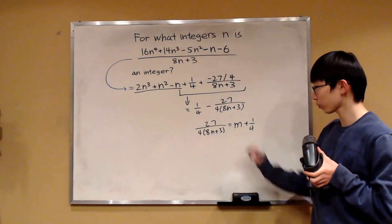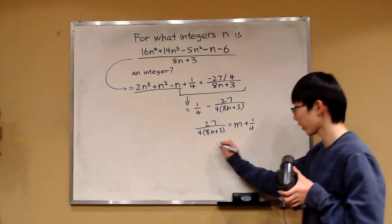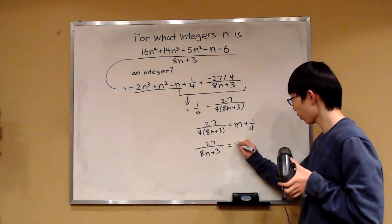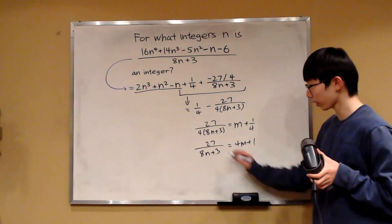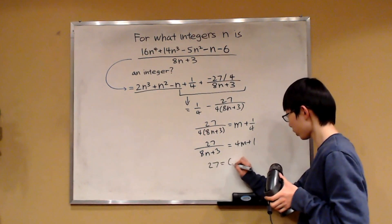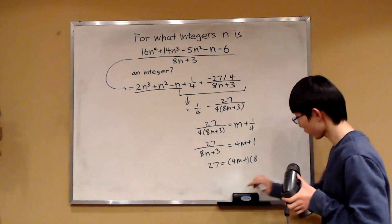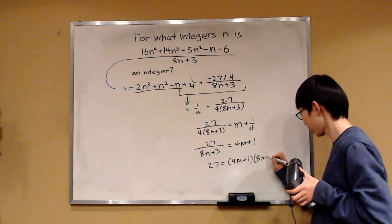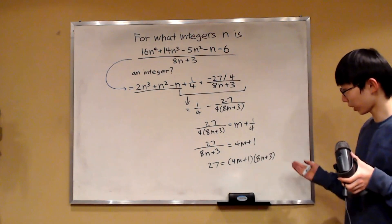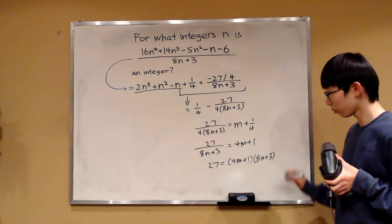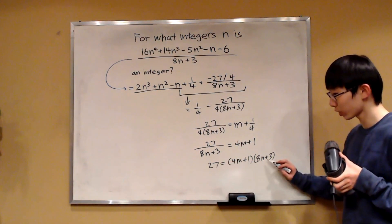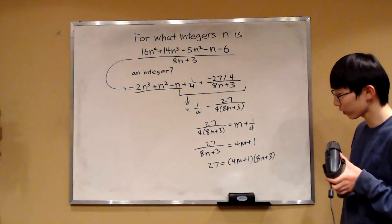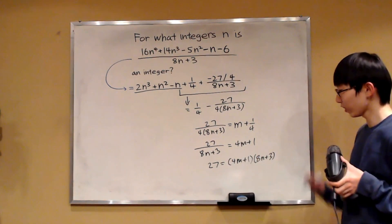Let's simplify this expression. We can multiply both sides by 4, giving us 27 over (8n plus 3) is equal to 4m plus 1. And we can multiply both sides by (8n plus 3), giving us 27 equals (4m plus 1) times (8n plus 3). Notice that because m and n are both integers and 27 is a product of two integers, we are only looking for factor pairs of 27.